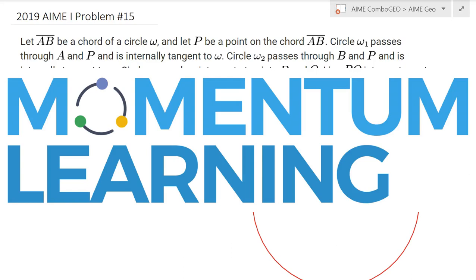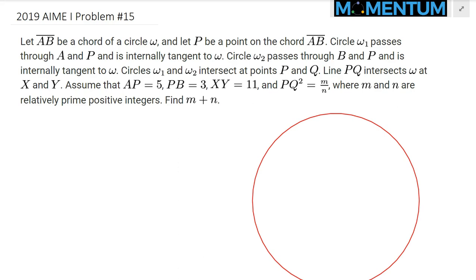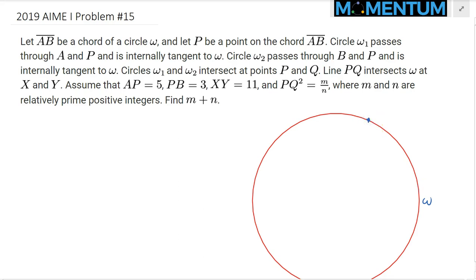This is 2019 AMC problem number 15. Let AB be a chord on circle omega. Let's go ahead and draw a chord — something like this. We'll label this point as A and this point as B.